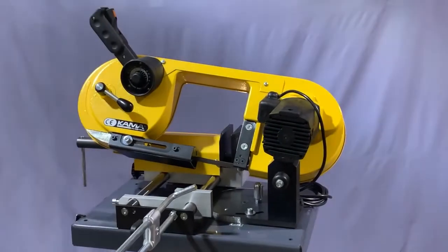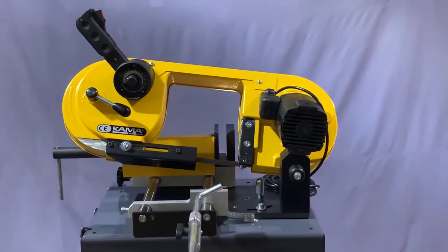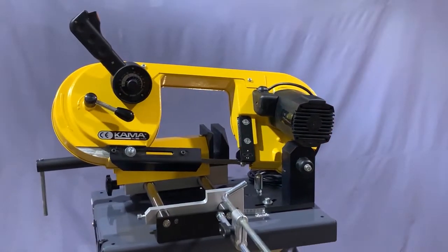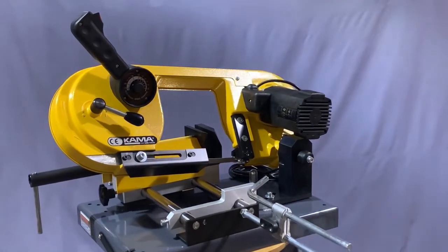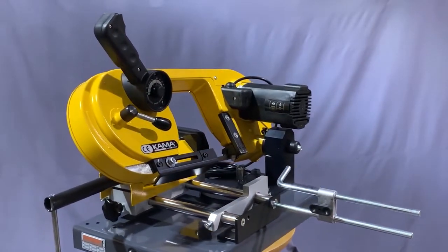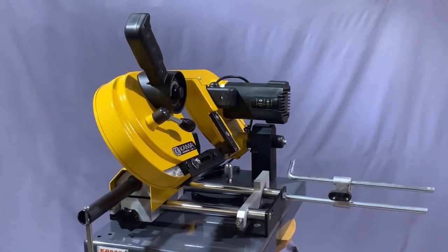Our EV-90DM double miter benchtop saw has all the features and cutting capacity of the EV-88 plus the ability to make mitered cuts up to 45 degrees both ways.